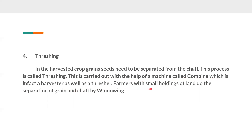Farmers with small holdings of land do the separation of grain and chaff by winnowing, that is, with the help of wind, so that the light particles of chaff can be removed. These are the four questions we are discussing today. Copy this and learn it. The remaining question answers we will discuss tomorrow. Thank you.